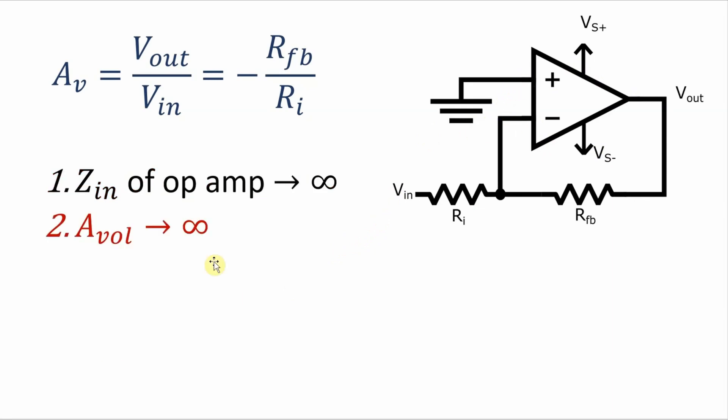And the second assumption that we're going to make is that the open loop voltage gain of the op-amp approaches infinity. There are other ideal characteristics like the output impedance is zero and the bandwidth is infinite but these two right here are the two most important ones we need for our calculations.